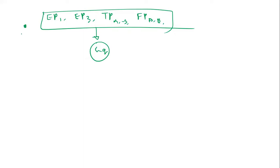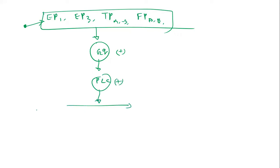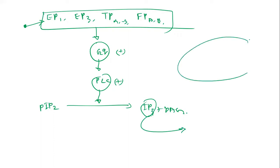When the agonist — prostaglandin E2, prostaglandin F2 alpha, and thromboxane — binds to these corresponding receptors, the Gq protein will be activated. Gq protein then activates the phospholipase C enzyme, which converts phosphatidylinositol bisphosphate (PIP2) into inositol triphosphate (IP3) plus diacylglycerol (DAG). This IP3 will open calcium channels in the smooth muscle cell.